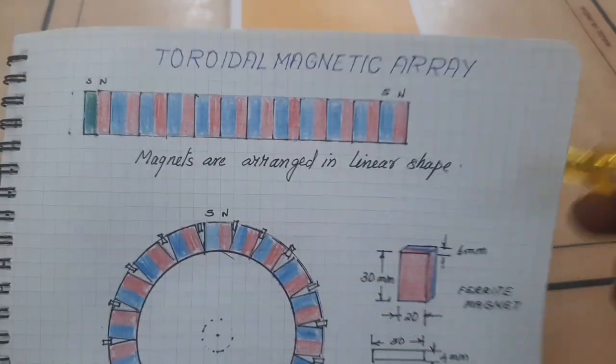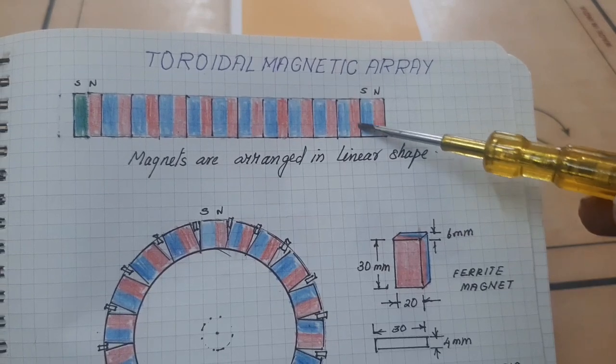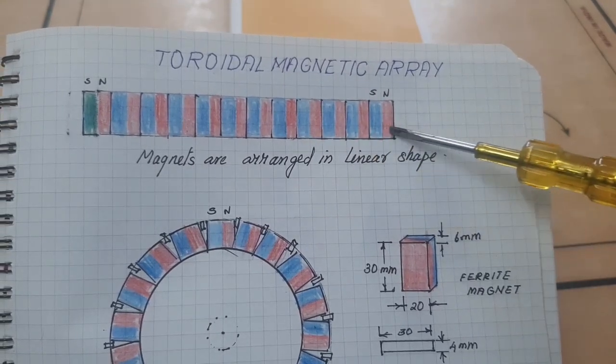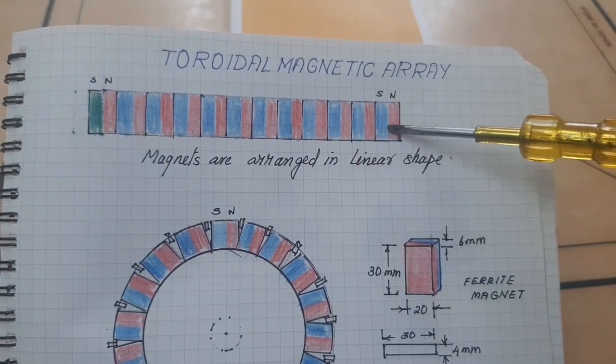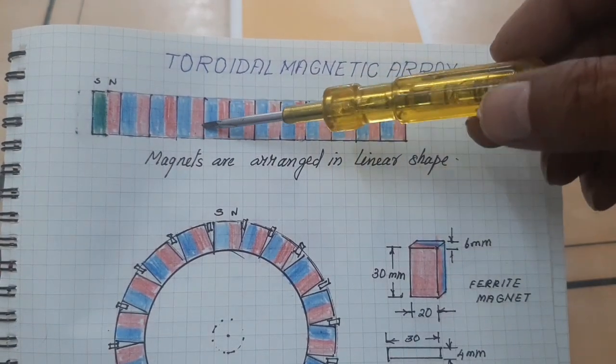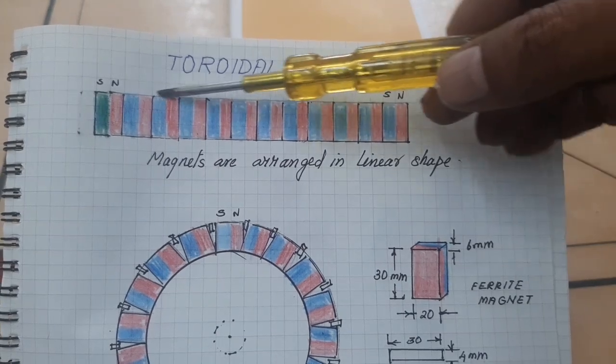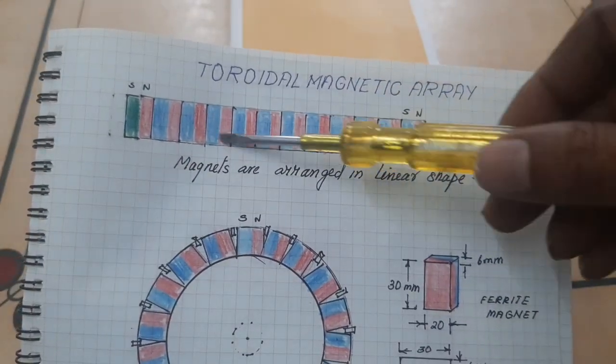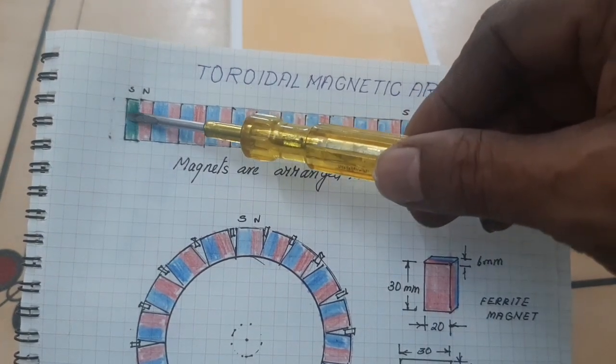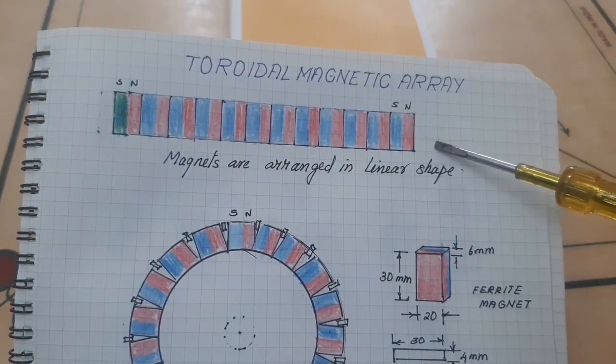Here, look at this. This is the group of magnets attached in a linear manner so that the magnets act as a single magnet and powerful poles are created. Here this is the powerful south pole and here this is the powerful north pole.